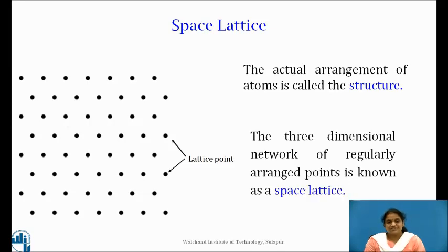The three dimensional network of regularly arranged points is known as a space lattice. A point is a dimensionless and shapeless entity.